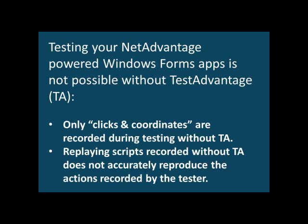QTP and RFT have just a tiny bit of general knowledge of third-party controls, which is okay for very simple things — like if you click on a grid cell it will record that accurately. But Infragistics controls have lots of functionality and lots of areas that can be interacted with, and all those areas are not known by either testing suite. Without Test Advantage you really can't create any useful recordings of your Net Advantage powered apps — you'll only get clicks and x/y coordinates, which will be pretty much useless upon playback.